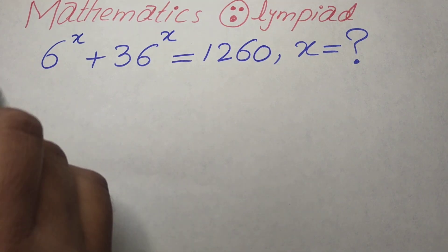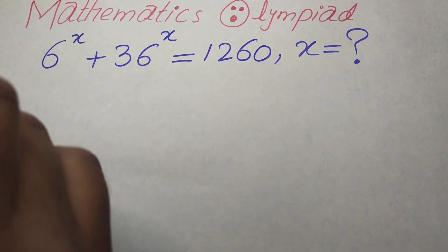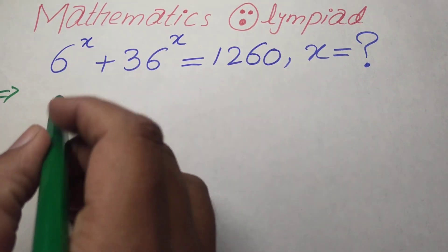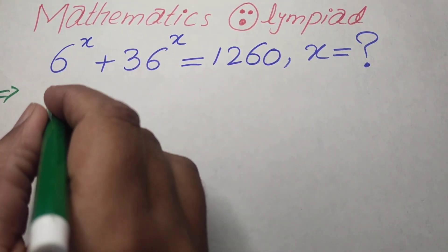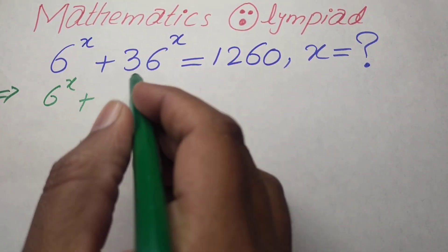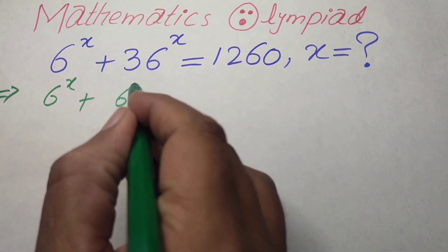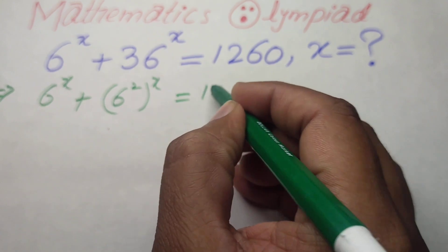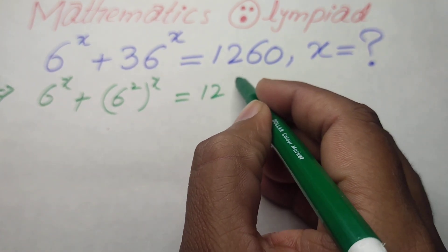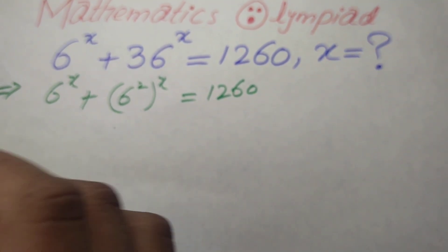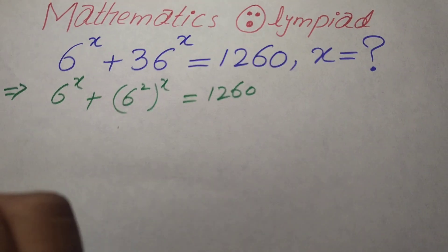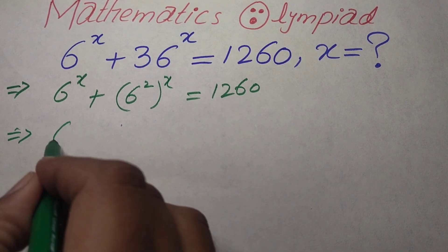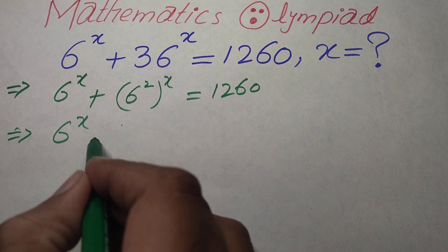Our very first step is to simplify this exponential equation. We will write 6 to the power of X, plus we will write 36 as 6 to the power of 2, whole power X, is equal to 1260.